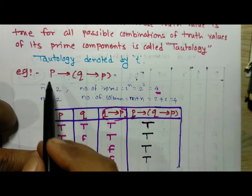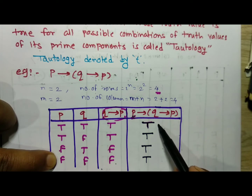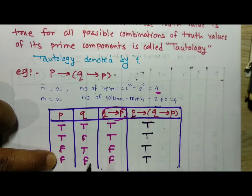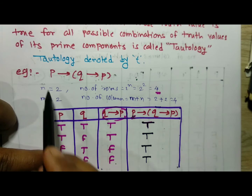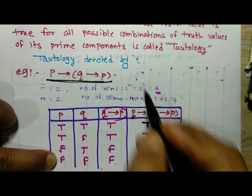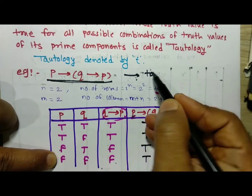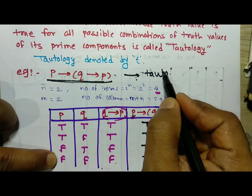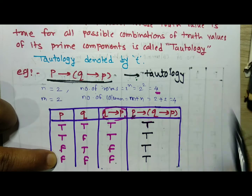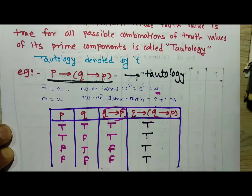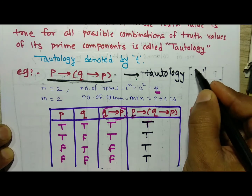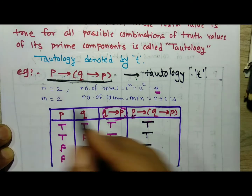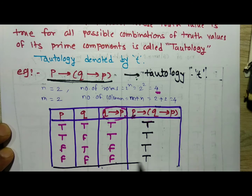Our statement pattern has truth values that are true everywhere, whatever be the combination of truth values of its prime components. Therefore, this statement pattern is nothing but a tautology. It is called a tautology and is denoted by small t.